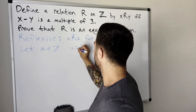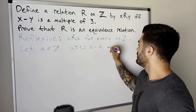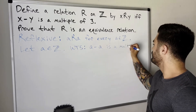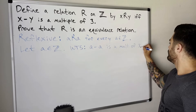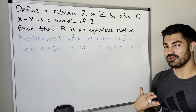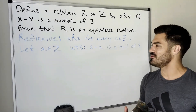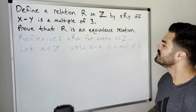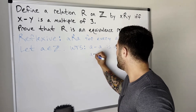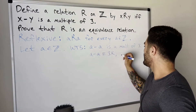We want to show that a minus a is a multiple of three. What does it mean to be a multiple of three? That means we want to show that a minus a can be written as three times some integer — that's what it means to be a multiple of three. Nine is a multiple of three because three times three is nine. In other words, we want to show that a minus a equals three times k, where k is some integer.